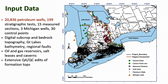This slide shows the location of our input data, which is comprised of 20,836 petroleum wells, stratigraphic tests, measured sections, three wells in Michigan, and 30 control points. We've also incorporated digital subcrop and bedrock topography, Great Lakes bathymetry, regional faults, oil and gas reservoirs, salt leases and caverns, and there has been extensive QA/QC editing of formation tops.